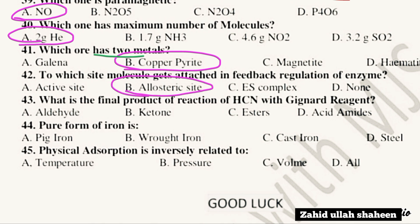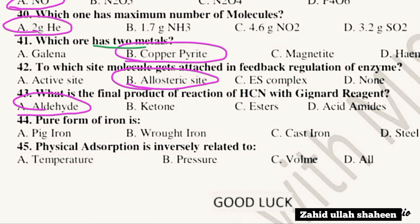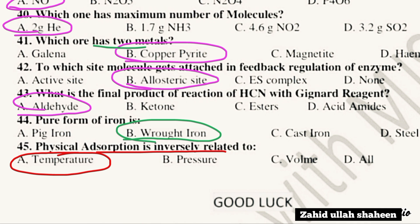Question 43: What is the final product of the reaction of HCN with the Grignard reagent? Question 44: Which form of iron is favored — option B. Question 45: Physical absorption is inversely related to temperature — take option.